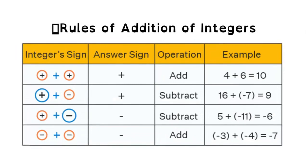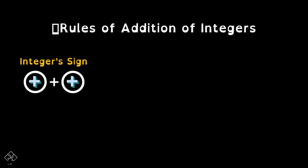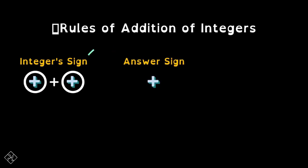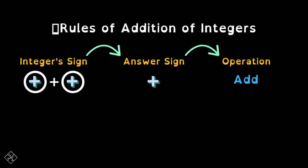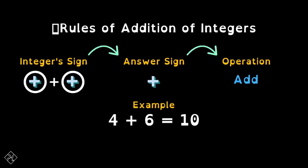Let's emphasize the following rules. First is the integer sign of positive and positive. Kapag parehas positive yan, the answer sign must be a positive sign. And ang operation na gagamitin natin is add. For example, we have 4 plus 6, and that is equal to 10.